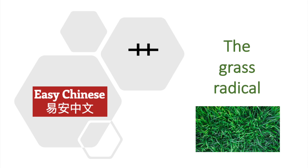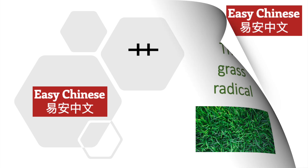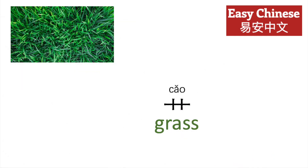Ni hao, welcome to I'an Zhongwen, Easy Chinese. The Grass Radical. Cao means grass.